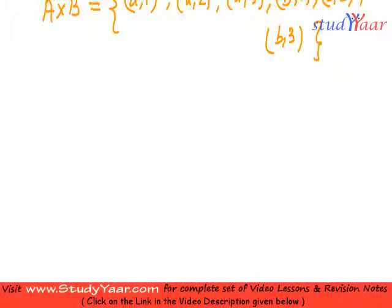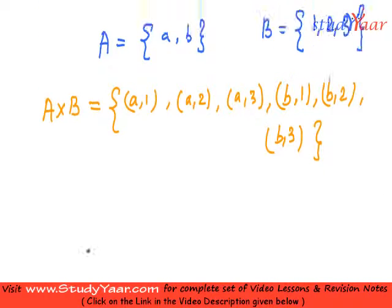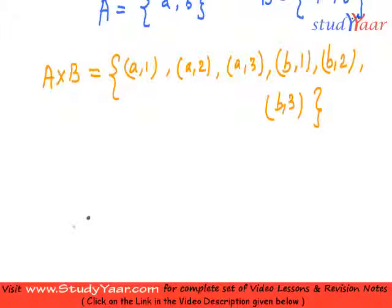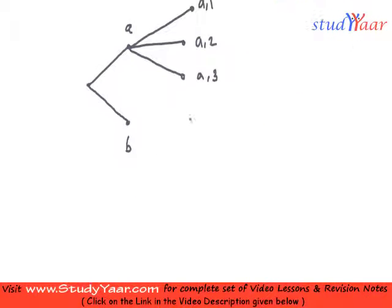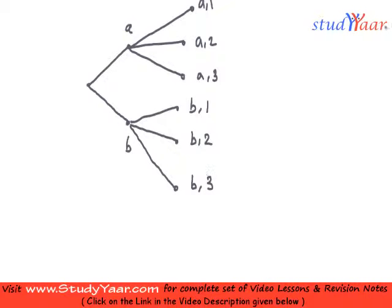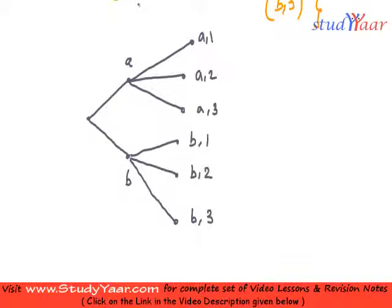Graphically, you can represent this Cartesian product like this. Here you are going to have your set A on one side and set B on the other. From A, you get the pairs (a,1), (a,2), (a,3), and similarly (b,1), (b,2), and (b,3). This is the graphical representation of A cross B.